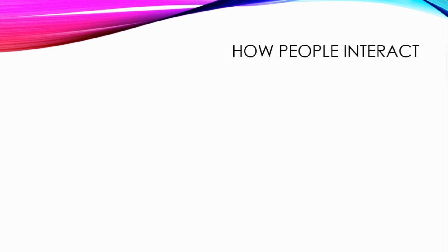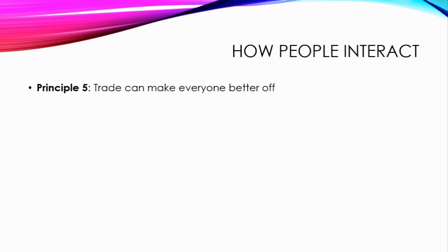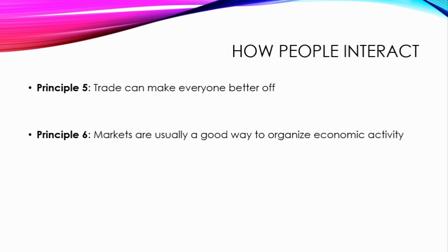Under 'how people interact,' Principle 5: trade can make everyone better off. Without trade, you would have to do everything by yourself. We are better off when we trade, but trade also results in competition — businesses compete with one another to bring out the best options for customers, and individuals searching for jobs compete with other unemployed persons. Trade allows countries to specialize in what they do best and to enjoy a greater variety of goods and services.